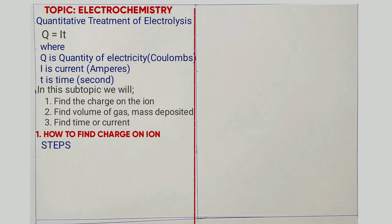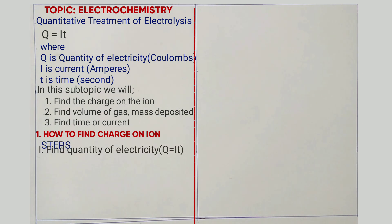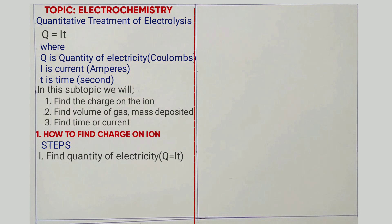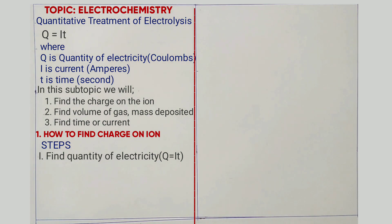The steps we are going to follow to calculate the charge on an ion: Step one is to find the value of Q, that is quantity of electricity, which is Q = IT. From the current given, you multiply by time in seconds. So if the time is given in minutes, you multiply by 60. If the time given is in hours, you multiply by 3600 to convert to seconds.